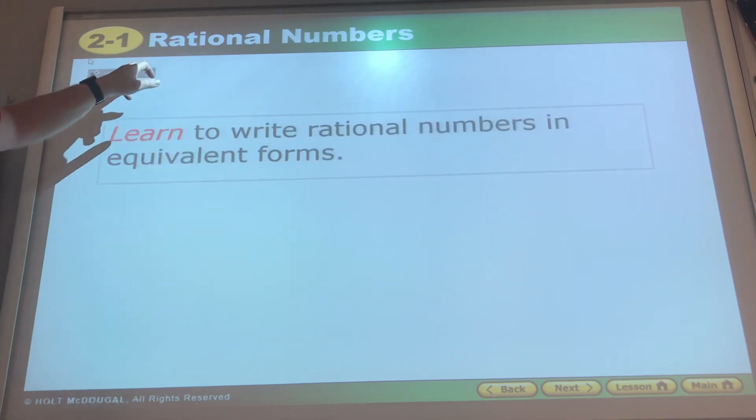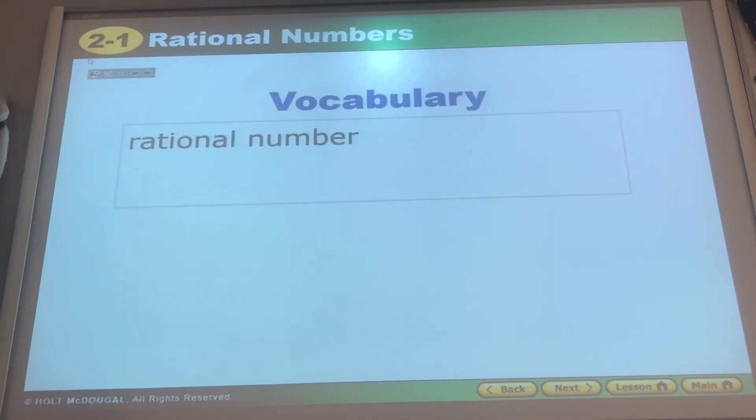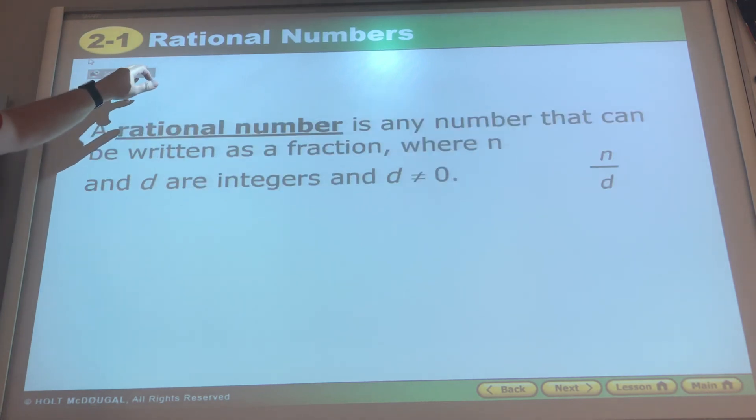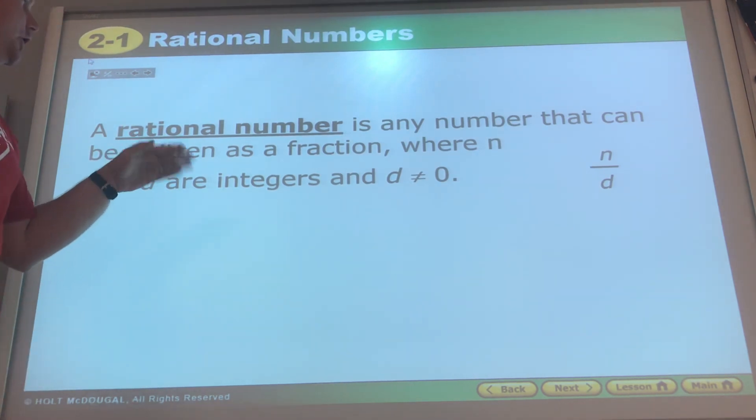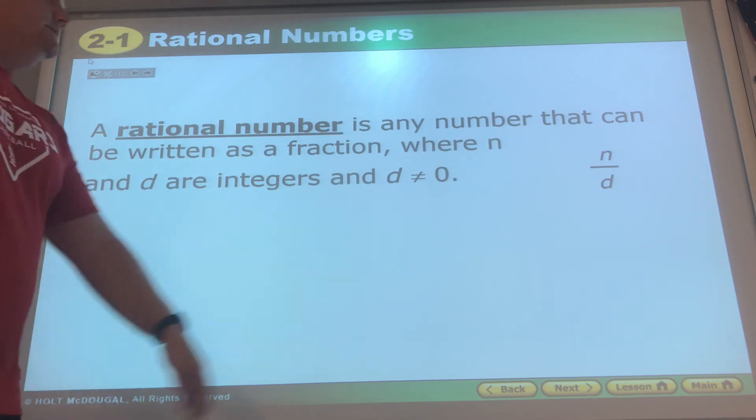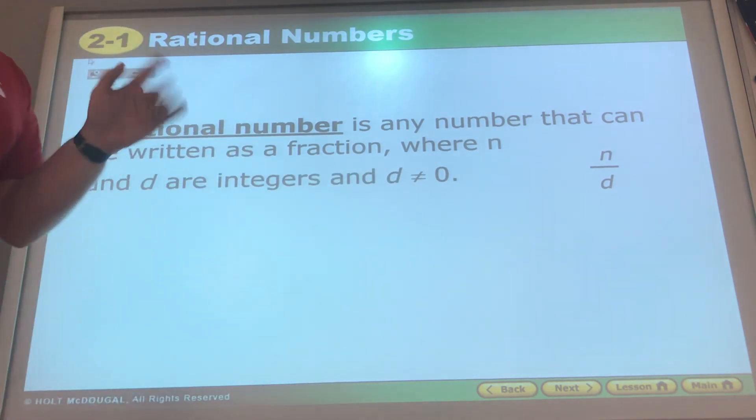Learn to write rational numbers in equivalent forms. A rational number is any number that can be written as a fraction where n and d are integers and d is not zero because you can't have zero on the bottom.